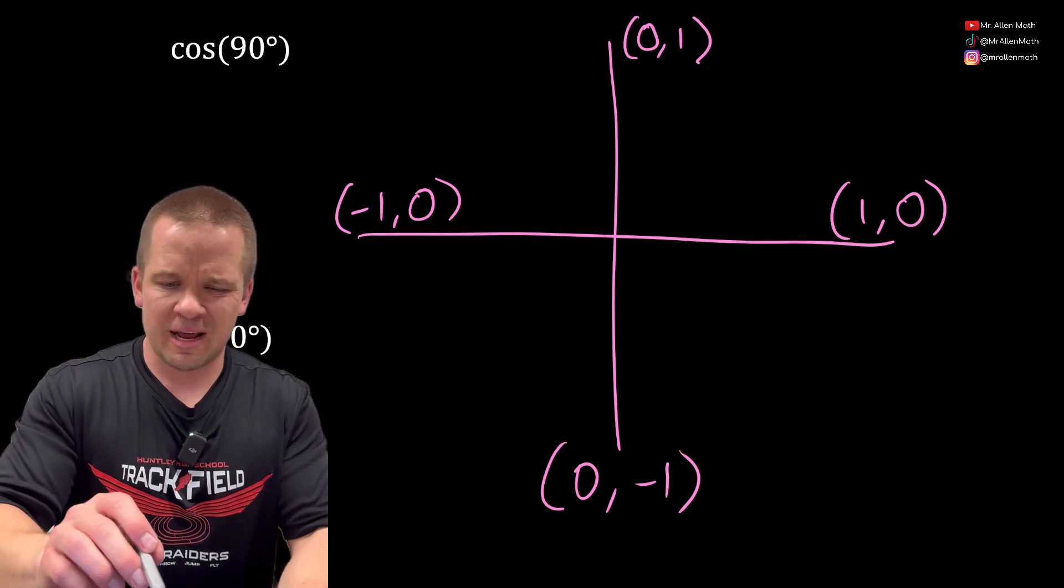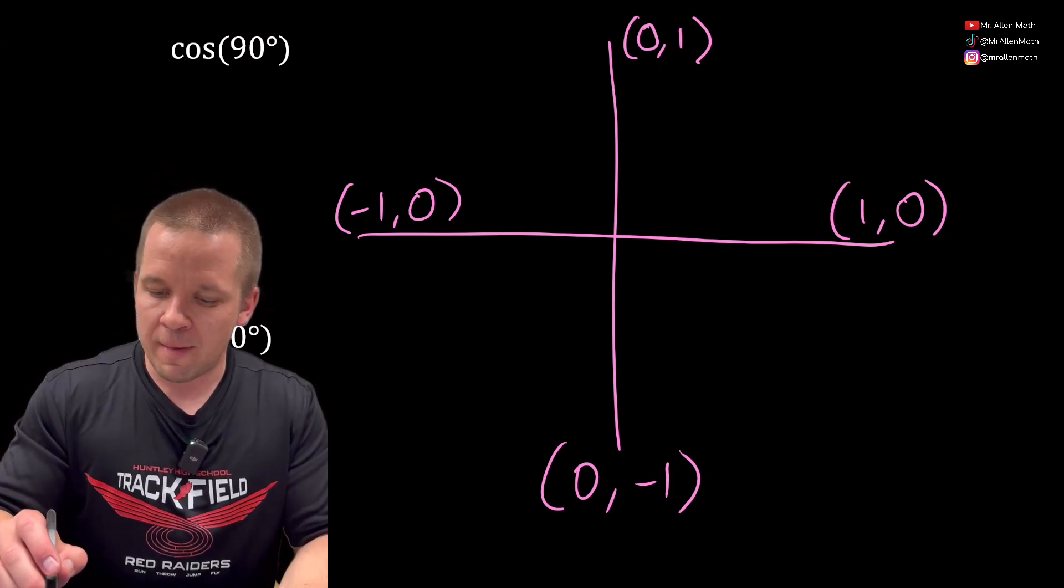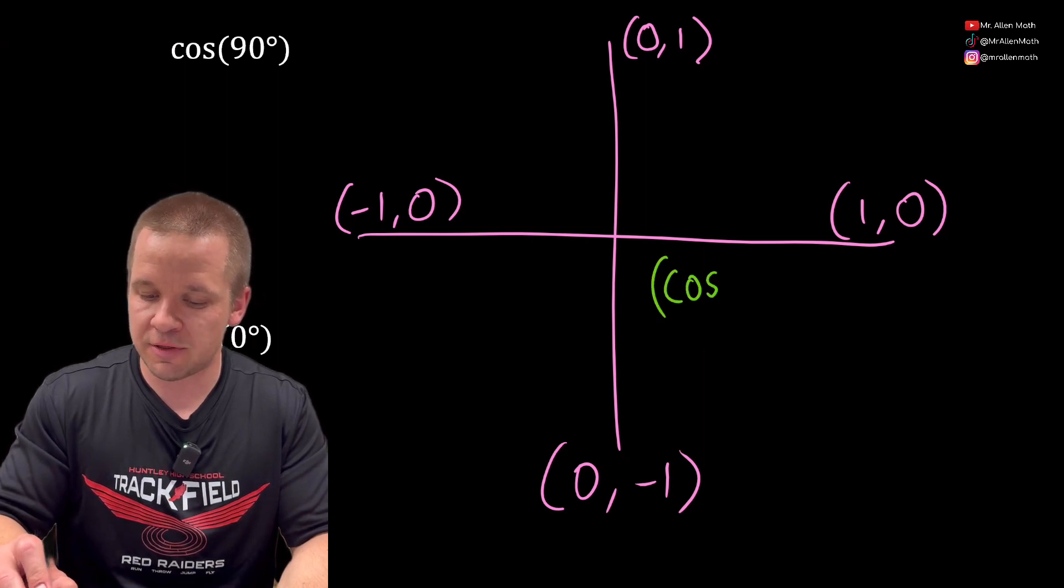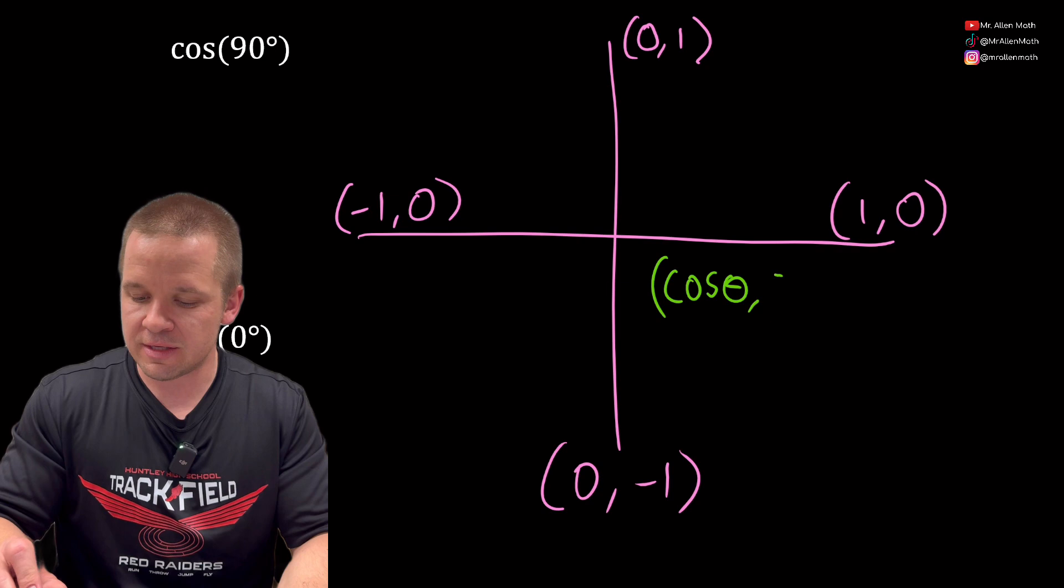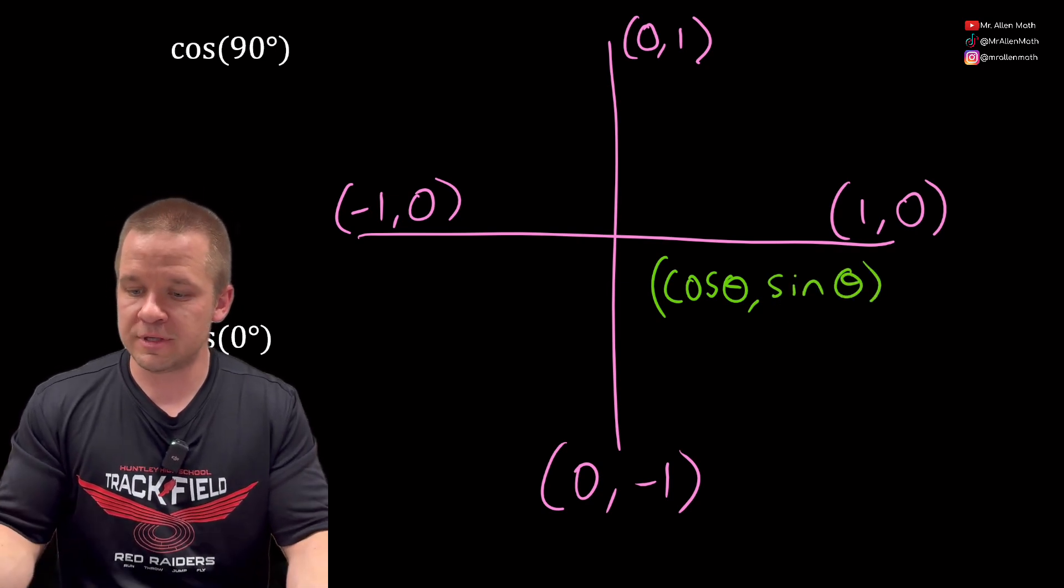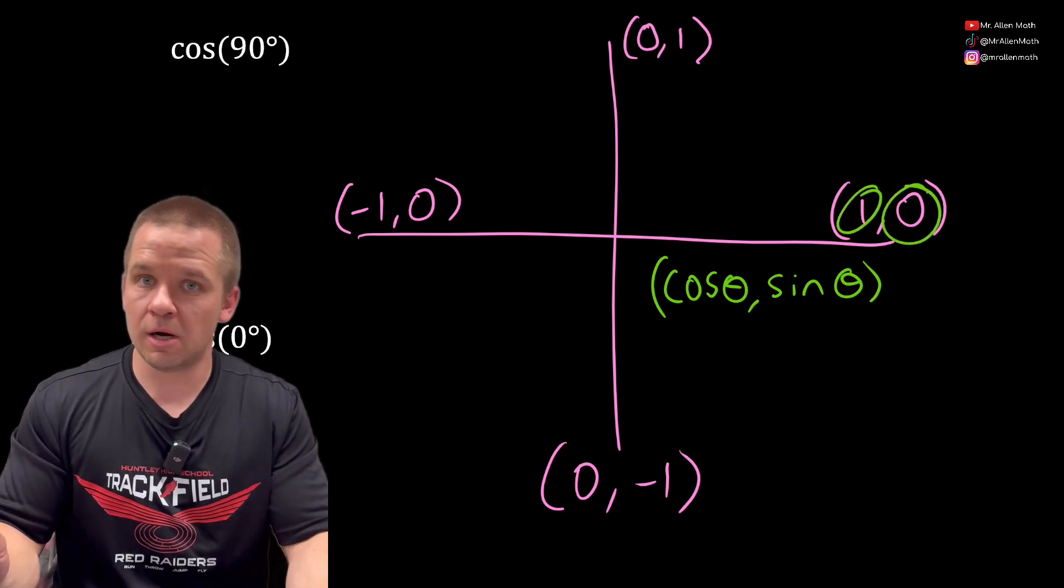Now important to note here, you gotta have like a little key. We have these ordered pairs, what do they even mean? Well my (x,y) is (cosine, sine). So cosine of theta, meaning my angle, and then sine of theta. Those are my x and y coordinates. So cosine of zero is one, sine of zero is zero.